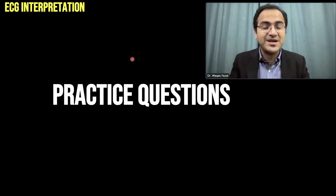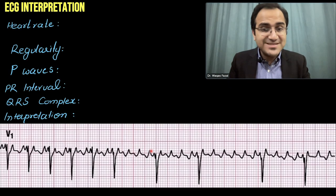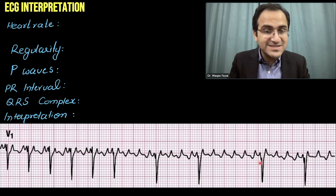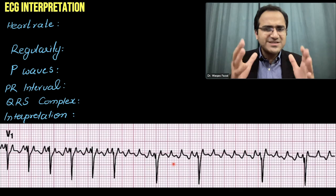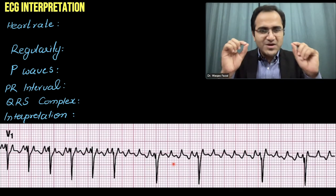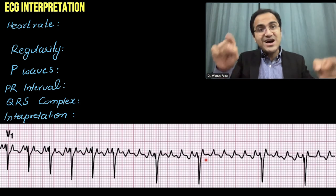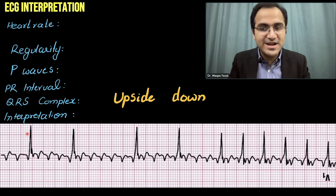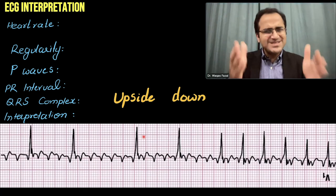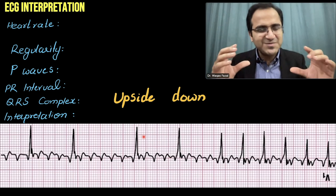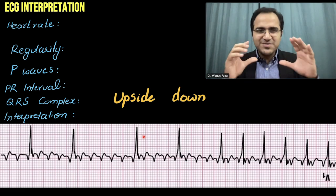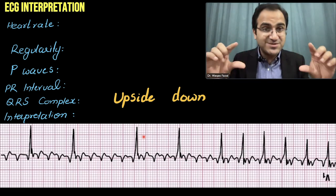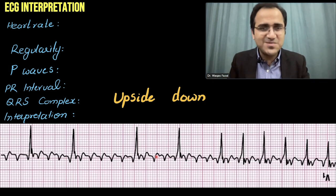Let's practice some ECGs of atrial flutter. In this first ECG, these are flutter waves followed by QRS complexes coming at an irregular rate. Sometimes when you cannot appreciate the classical pathognomonic sawtooth appearance, you can turn the ECG upside down — this is a trick to see the flutter wave. After turning this V1 tracing upside down, the classical sawtooth appearance becomes clear.